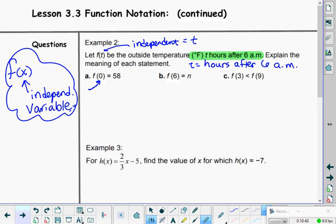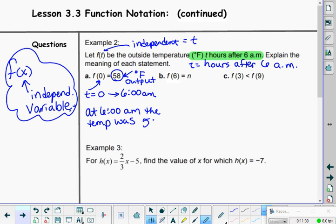Now, when I look at this function notation, it draws my attention to the zero. And since T is my independent variable, T is set at zero. What time would this be then? If it's zero hours after 6 a.m., this would indicate to me then that we are at 6 o'clock a.m. The output is going to be degrees Fahrenheit. Let's write output on that. 58 is my output. It's degrees Fahrenheit. So at 6 o'clock a.m., the temperature was 58 degrees. We haven't been that warm lately, have we? Definitely becoming fall in Minnesota. We don't get temperatures of 58 degrees at 6 a.m. very often anymore.